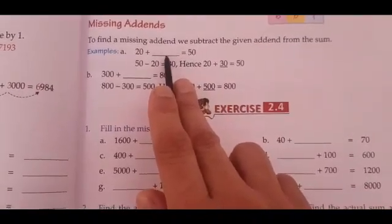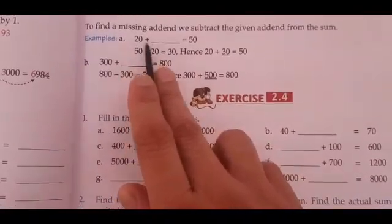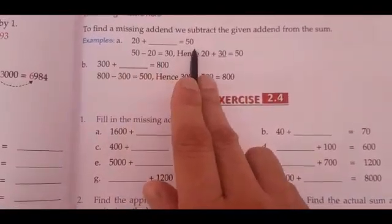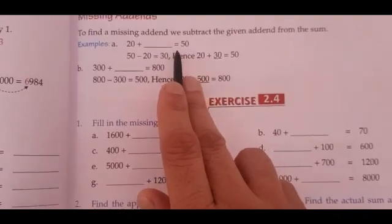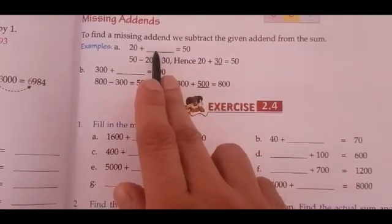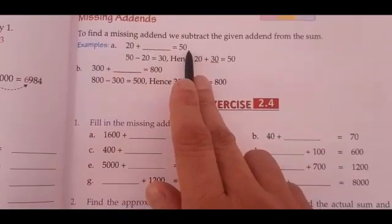That means what number should be filled here so that this plus this number turns to 50. In smaller numbers it is easy to say you will be adding 30 to make it 50, but what is the logic behind it?